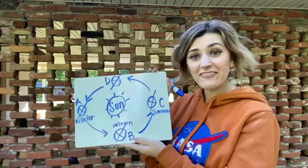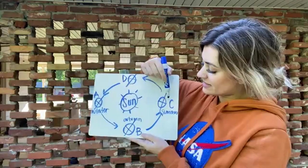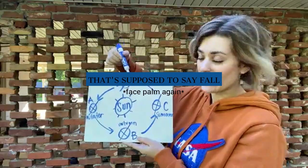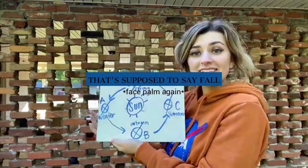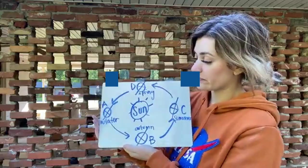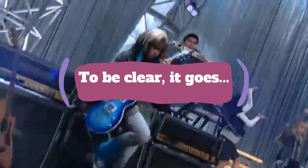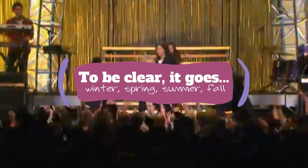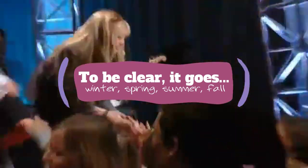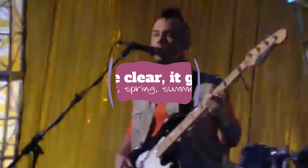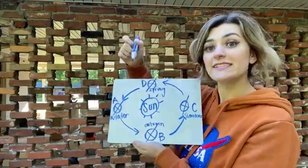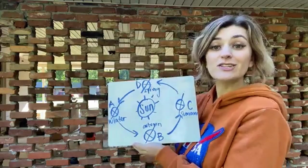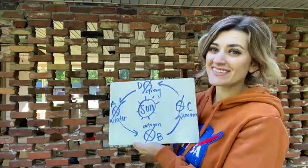And then, after summer, the season is fall. And then, the seasons start over again. Nobody's perfect — I gotta work it again and again to get it right. So, the tilt of the Earth and the revolution contribute to our seasons.